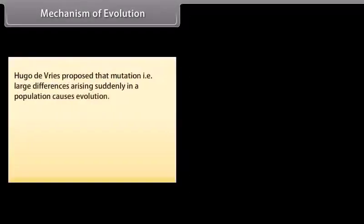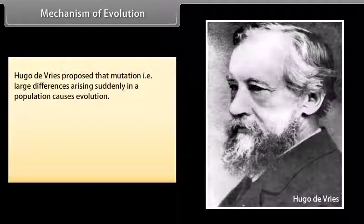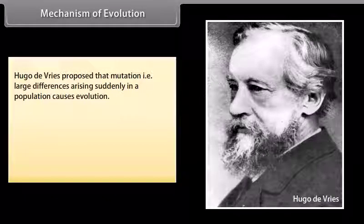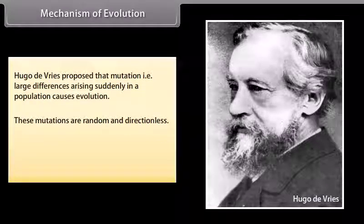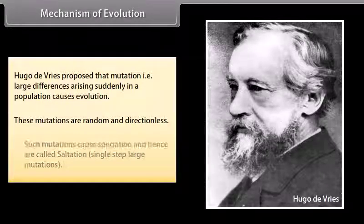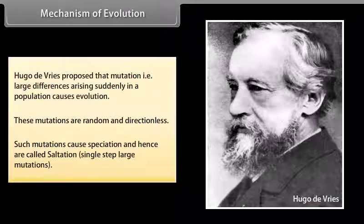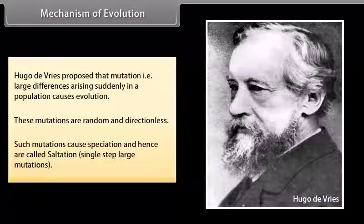Mechanism of evolution: Hugo de Vries proposed the concept of mutation — large differences arising suddenly in a population cause evolution. These mutations are random and directionless. Such mutations cause speciation and hence are called saltation, that is, single-step large mutations.